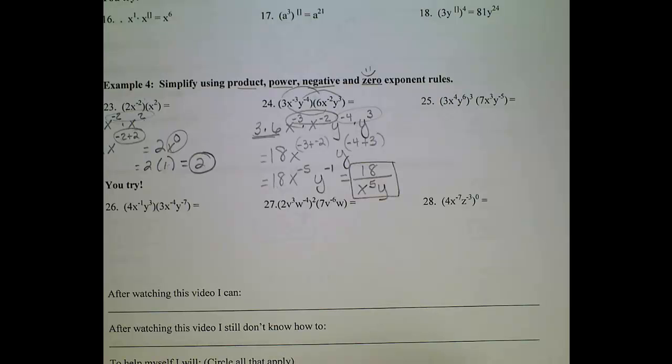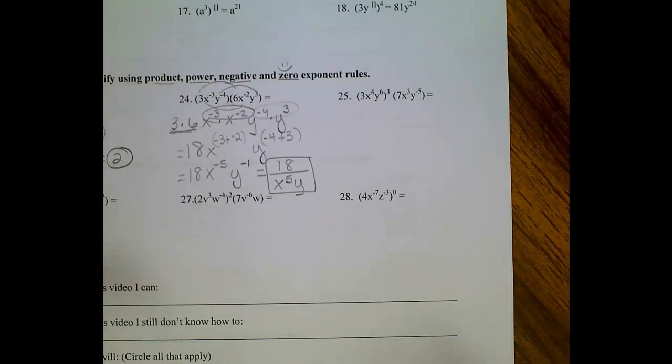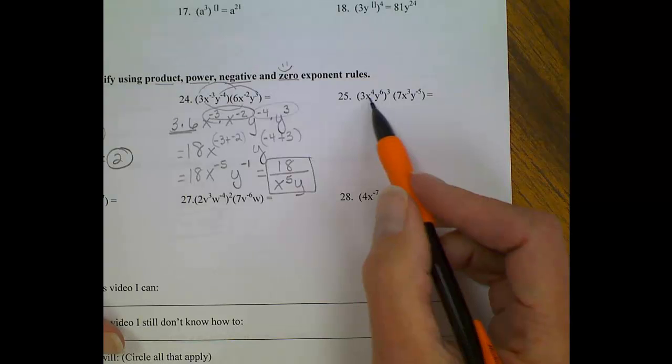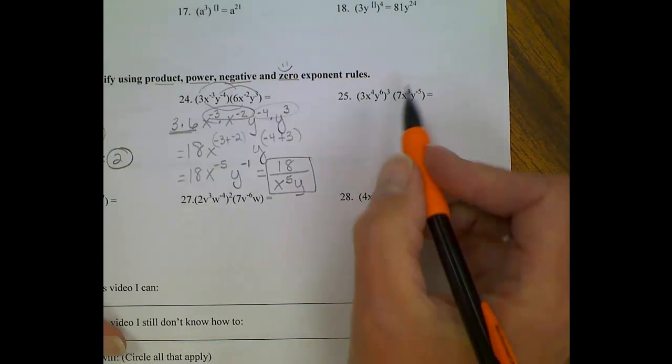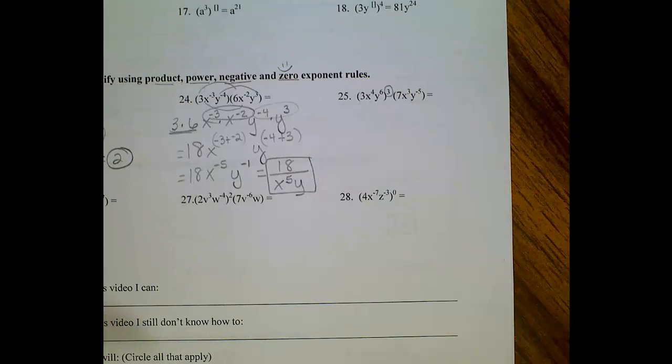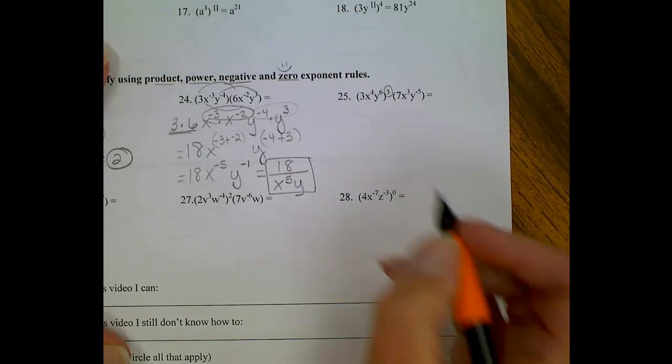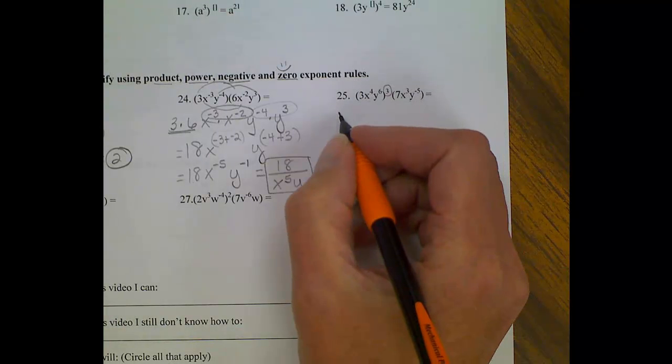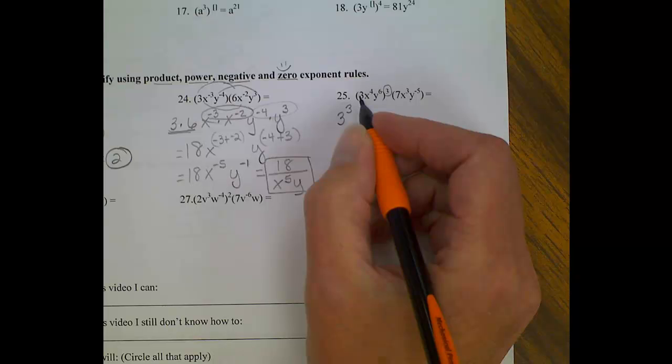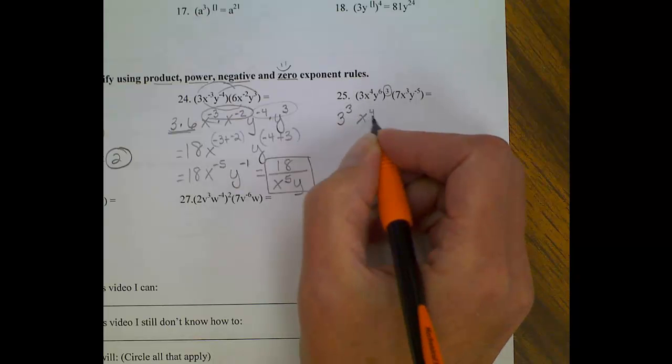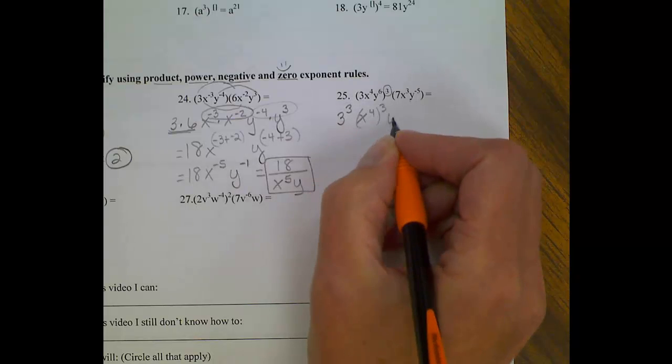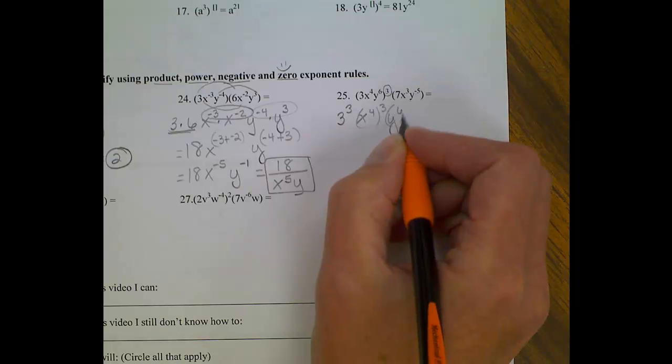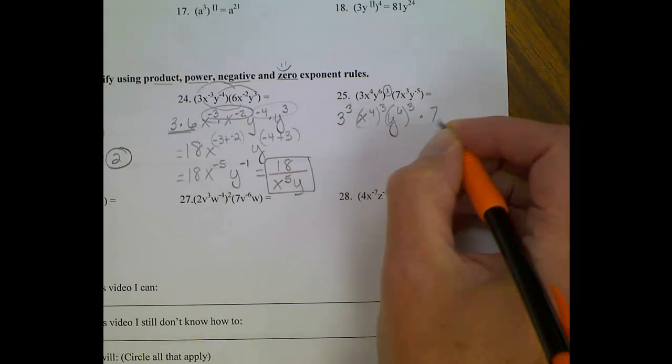Worst type of problem, most challenging for the day. We have a product problem, but we have one of those outside powers that we have to deal with first. So my first step, do a quick rewrite. Three to the third, x to the fourth to the third, y to the sixth to the third. All times seven, x to the third, y to the negative five.